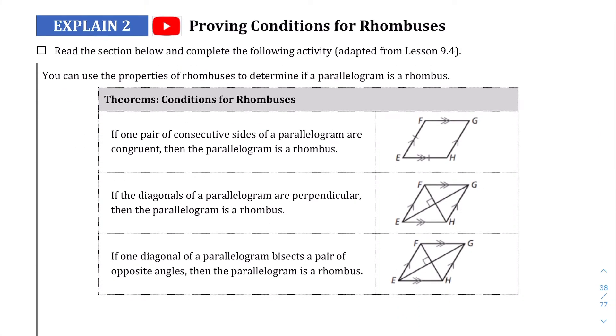Explain two is about rhombuses, and there are three specific theorems here. The first one says that if you have a parallelogram and two consecutive sides, meaning this side right here and this side right next to each other are congruent, then you have to have a rhombus. And this is one of those situations where if you have two sides that are congruent, well, guess what? These two also have to be congruent as well.